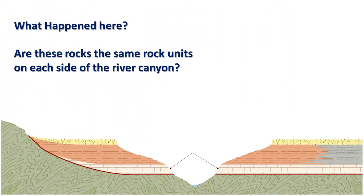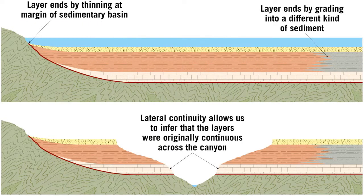What happened here? Are these rocks the same rock units on each side of the river canyon? The rocks originally extended across the entire region; it is only because the river eroded them that they are now separated by the canyon. This is an example of lateral continuity.